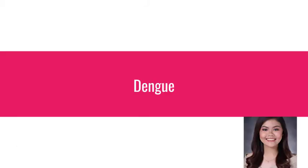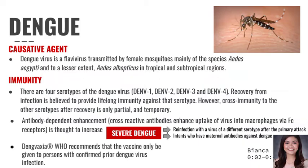The dengue virus is a flavivirus transmitted by female mosquitoes, mainly of the species Aedes aegypti. There are four serotypes of the dengue virus, and recovery from infection is believed to provide lifelong immunity against that serotype. Antibody-dependent enhancement is thought to increase severe dengue, and those at risk are those reinfected with a virus of a different serotype, or infants who have maternal antibodies against dengue.